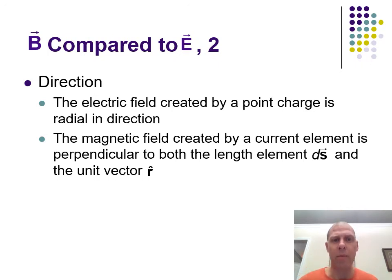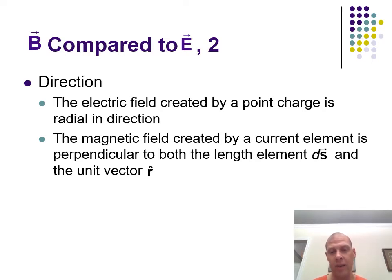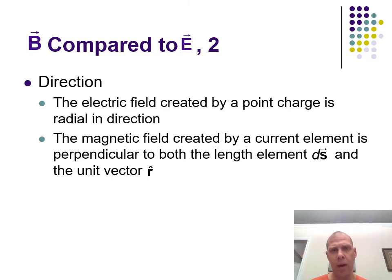The electric field from any charge goes out in the radial direction, which means the magnetic field needs to be perpendicular both to ds — that little segment of the wire — and to that radial vector r. Since we're talking about a third vector, if ds goes in the x-direction and r-hat goes in the y-direction, that gives us a particular direction showing how everything works out around the wire.